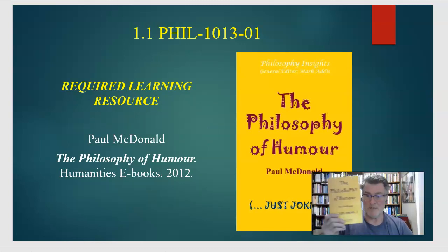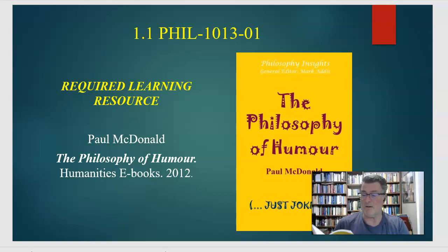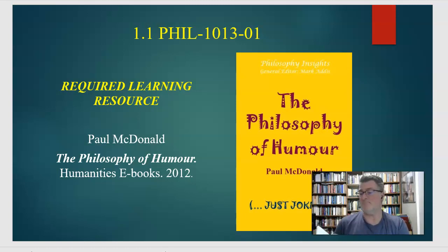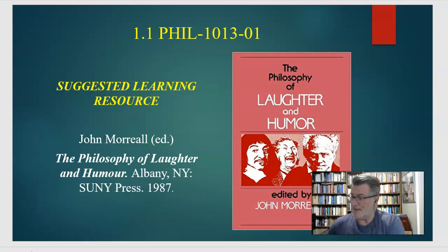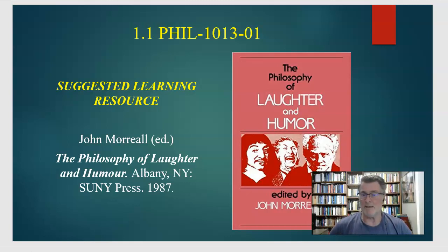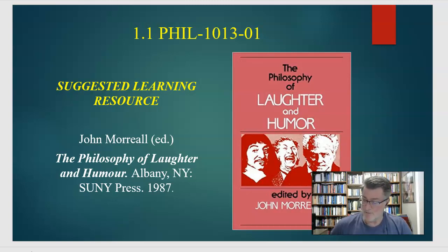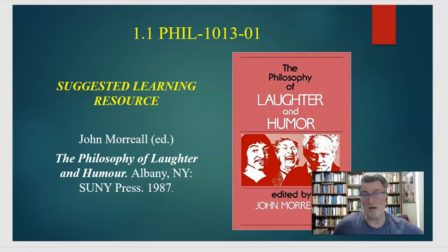The required learning resource is this book here: The Philosophy of Humor by Paul McDonald, which came out in 2012. It's a very useful book and we look at a lot of the things discussed in it. You essentially read the whole thing, but it's only about 120 to 130 pages — not really a whole lot — and you have the entire term to read it. Another book I used in putting together these slides is The Philosophy of Laughter and Humor edited by John Morreal — a very useful book that collects lots of short essays by a variety of different people under different topics: traditional theories of laughter and humor, contemporary theories, amusement and other mental states, and the ethics of laughter and humor.